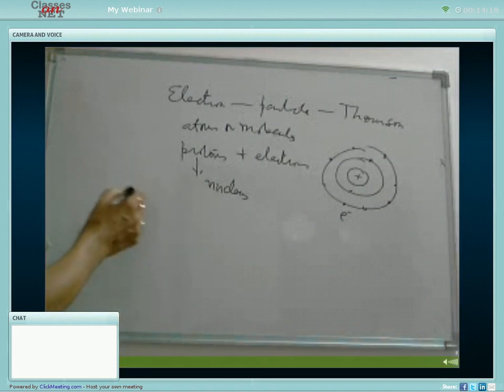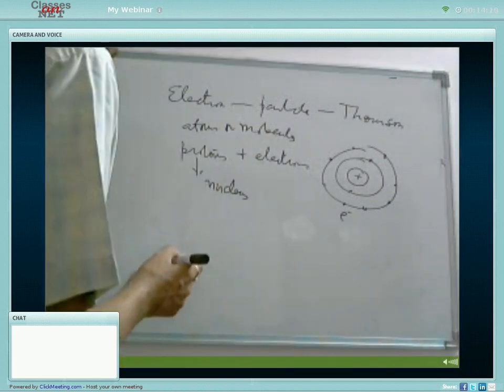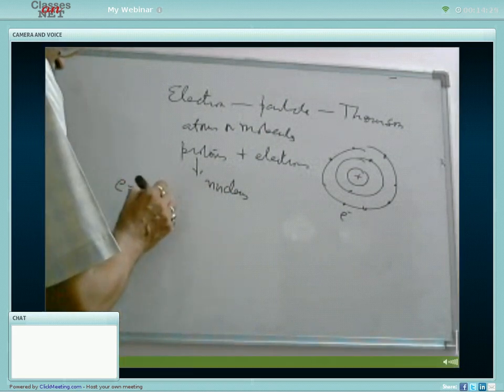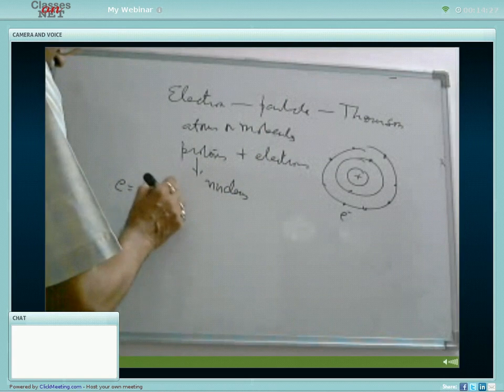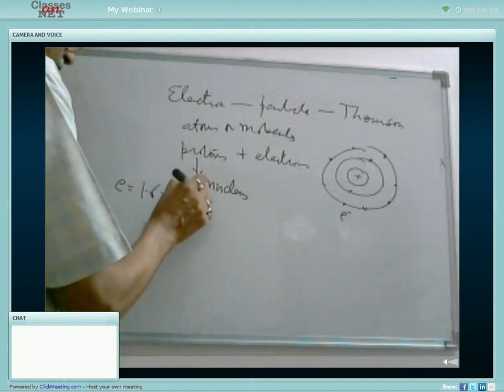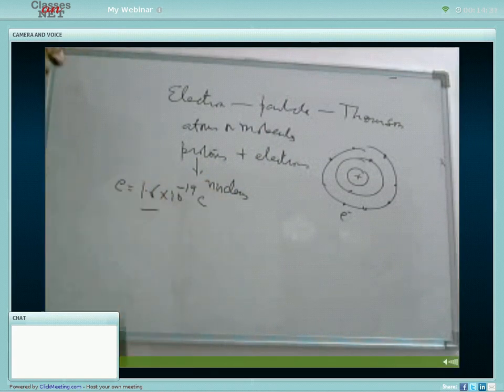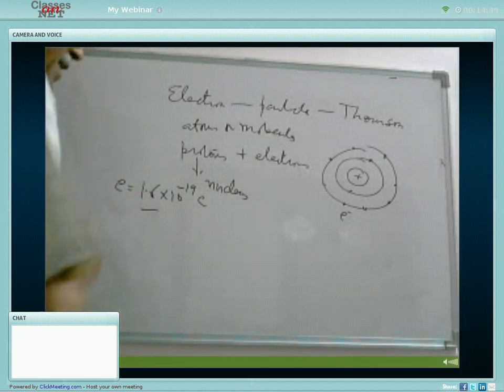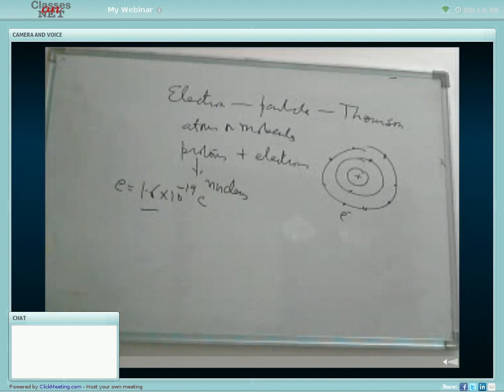This electron particle, which is moving around in different orbits, has a charge about 1.6 times 10 raised to the power of minus 19 coulomb. It is the smallest charge that a body can have. And this is the fundamental particle in the study of particle physics.